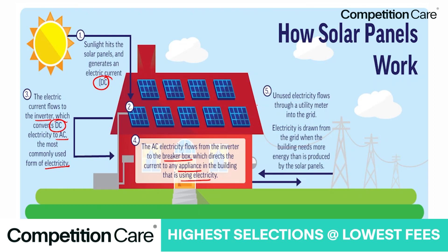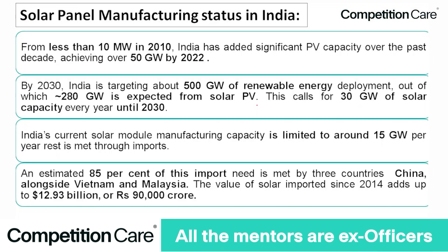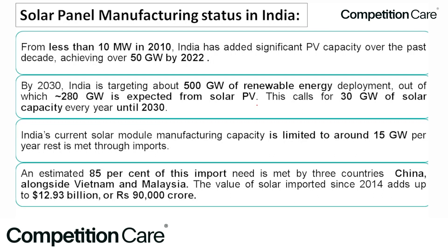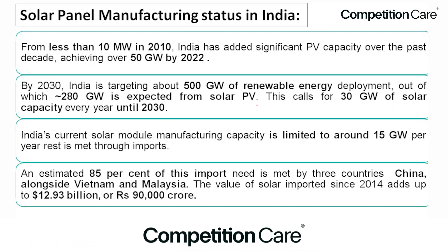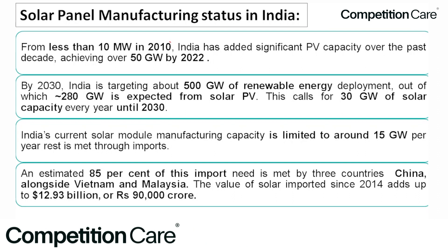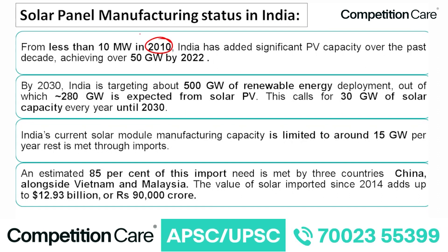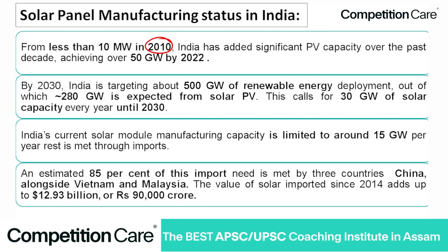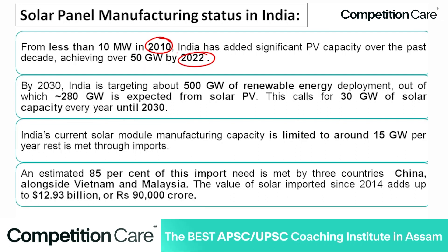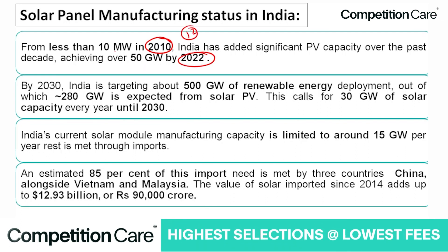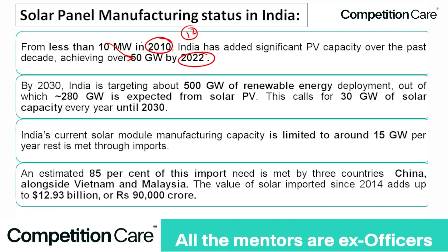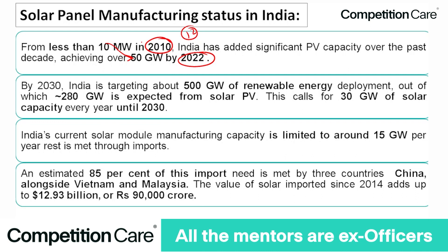This is how solar panels work. Now, what is India's status in solar panel manufacturing? We had only 10 megawatts of solar energy earlier, but by 2022 that increased from 10 to 50 gigawatts — a great achievement.